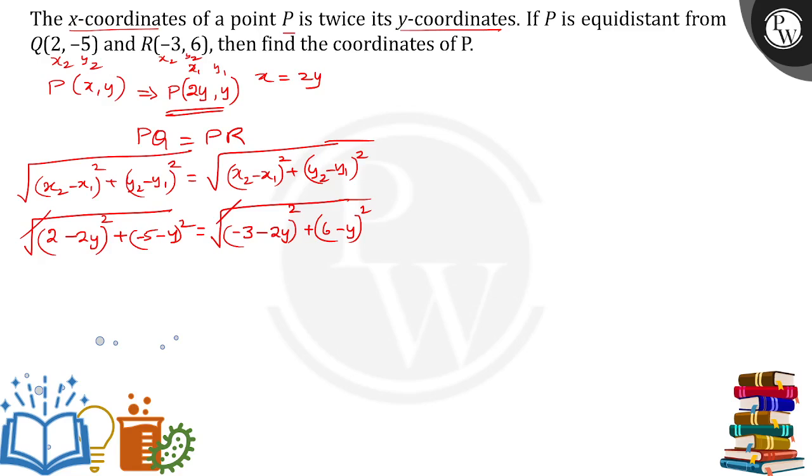Square root and square root will get cancelled. We'll get (2-2y)² plus, if I take minus common here, minus(5+y)² is equal to, if I take minus common here, (3+2y)² plus (6-y)².